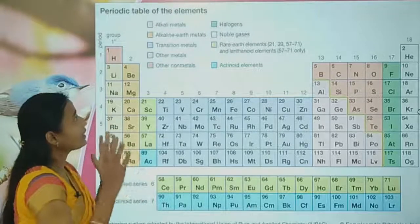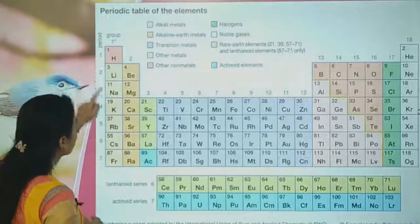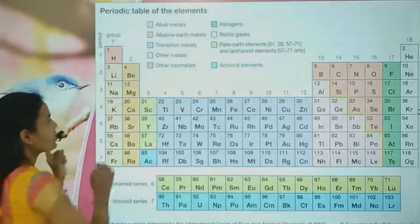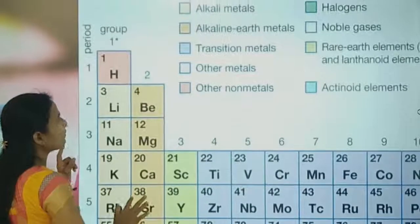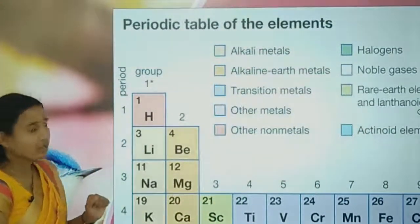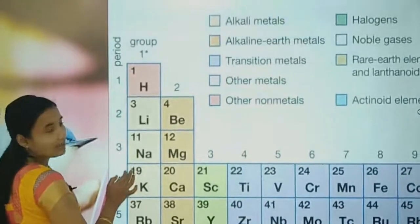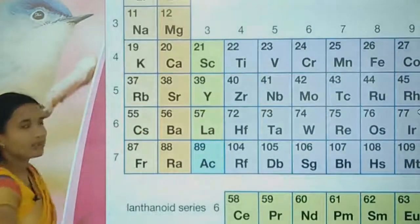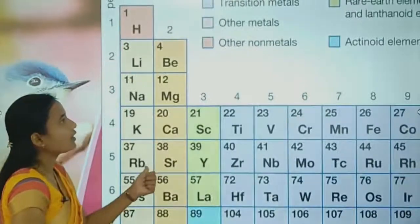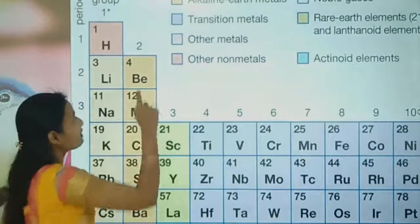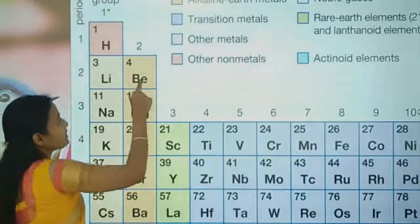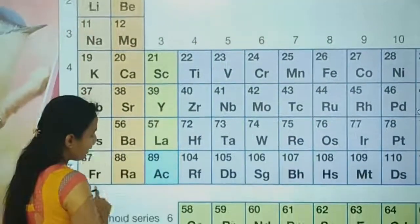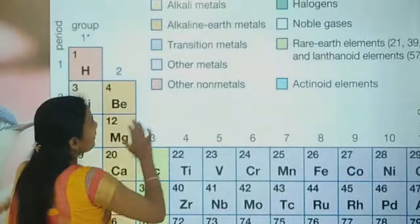The alkali metals are Group 1 elements — lithium, sodium, potassium, rubidium, cesium, and francium. The alkaline earth metals are Group 2 elements — beryllium, magnesium, calcium, strontium, barium, and radium.